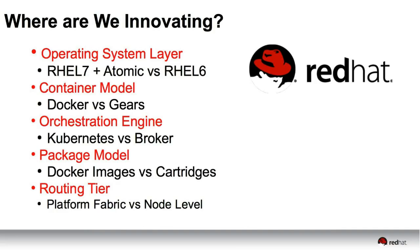The container model changes drastically — we move over to a Docker model from our gear model. This allows us to pick up more namespaces like the PID and the network, and to do more real IP work. Orchestration changes too — we move from our Ruby broker with an ActiveMQ message bus and Mongo storage over to a Kubernetes backend. The packaging model changes: we're no longer adding personality into gears with cartridges. We merge the cartridge with the gear under a Docker image. And platform routing moves to a larger central fabric from the per-application HAProxy approach.